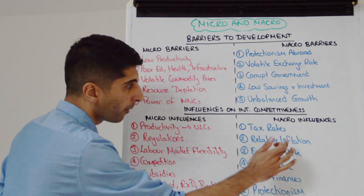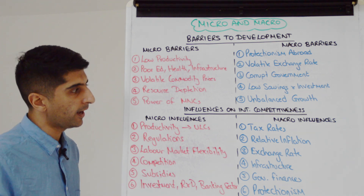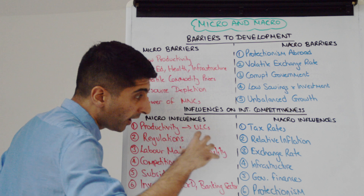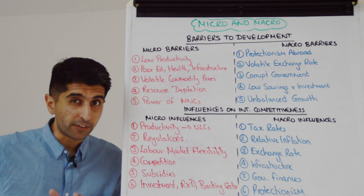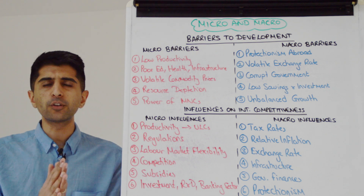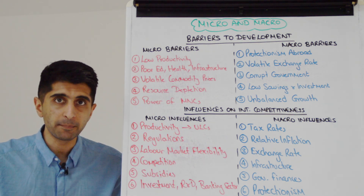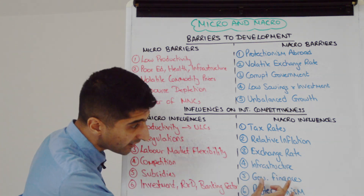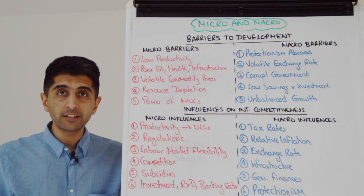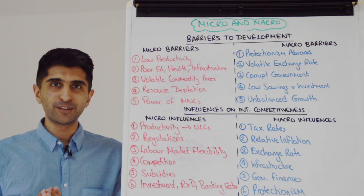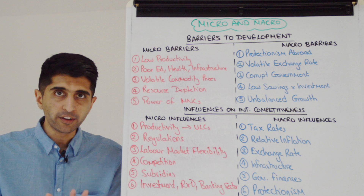Macro influences on competitiveness: low corporation tax and low VAT rates keep costs low and prices competitive while attracting FDI. Low relative inflation rates keep export prices competitive. Exchange rates are very important — a strong versus weak exchange rate affects the price competitiveness of exports and imports. Infrastructure is crucial: better transport infrastructure lowers prices and makes exports more price competitive, and also attracts FDI. Stable government finances promote FDI and domestic investment, driving price and non-price competitiveness. Protectionism — whether imposed by foreign countries or our own — can also affect our competitiveness, particularly if tariffs on raw materials increase domestic prices and worsen export competitiveness.